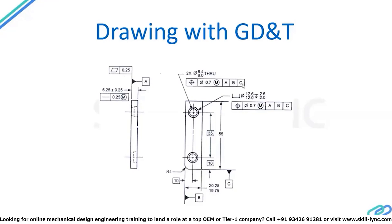Datum B is followed by datum C, which constrains any remaining available degrees of freedom. What we are communicating here is the exact method that should be used for inspecting this part. Any quality inspection personnel down the line, if they understand GD&T and know the rules and principles for reading and inspecting a GD&T dimensioned part, will adhere to those rules. There are no chances of miscommunication, and with this method you always confirm that your design intent is captured clearly and the final product coming out of manufacturing and inspection is in line with your design intent.